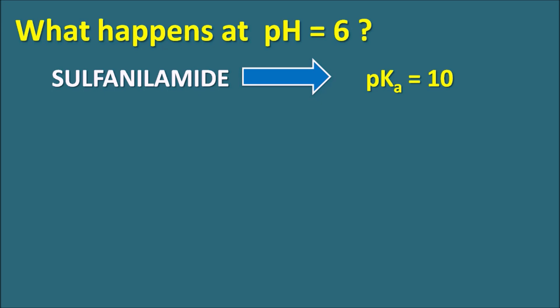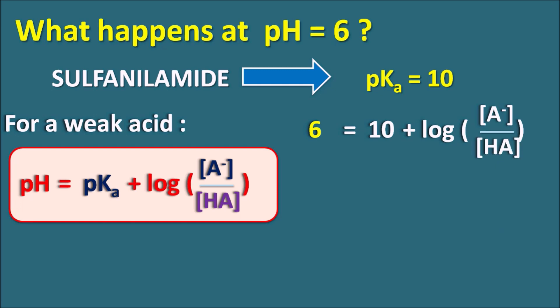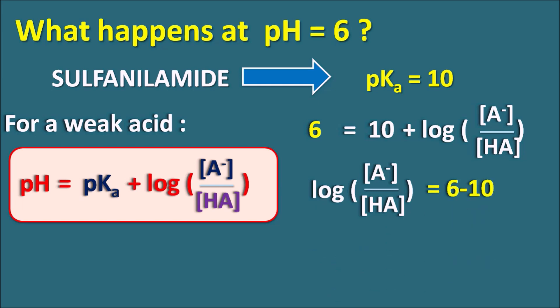Using the Henderson-Hasselbalch equation for a weak acid: pH = pKa + log([A⁻]/[HA]). Substituting pH = 6 and pKa = 10: 6 = 10 + log([A⁻]/[HA]), so log([A⁻]/[HA]) = −4. Taking the antilogarithm, the ratio [A⁻]/[HA] = 10⁻⁴.